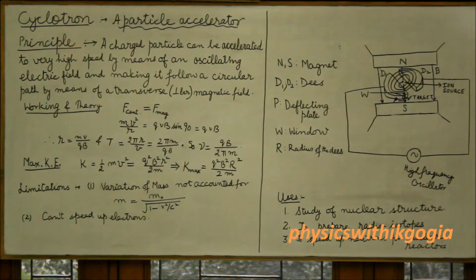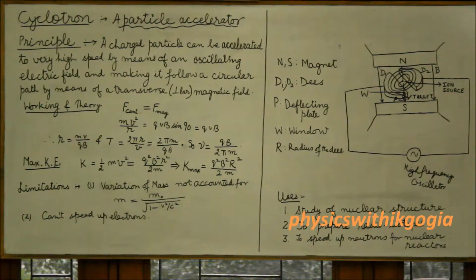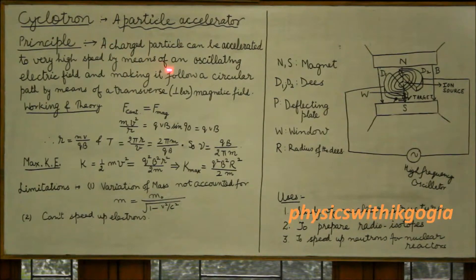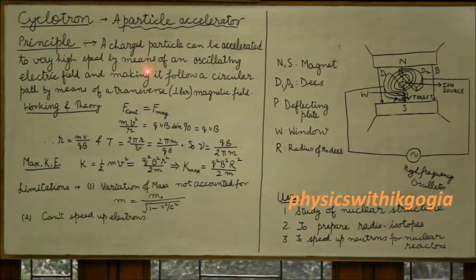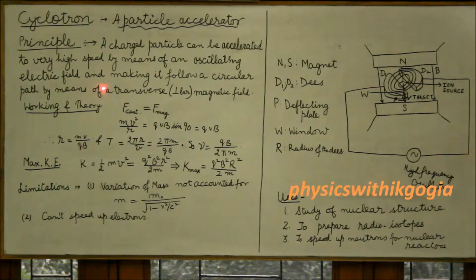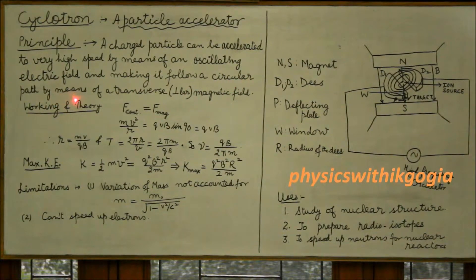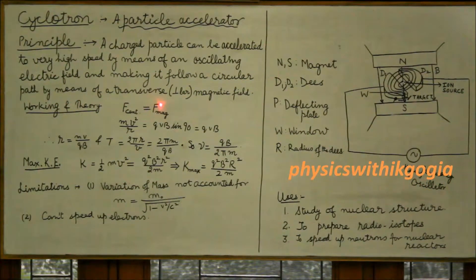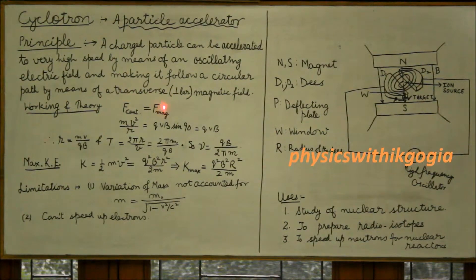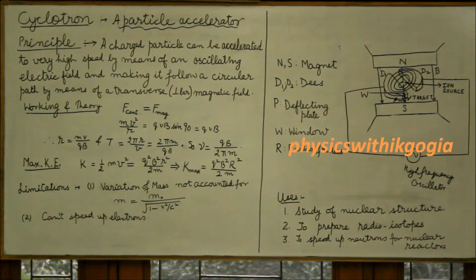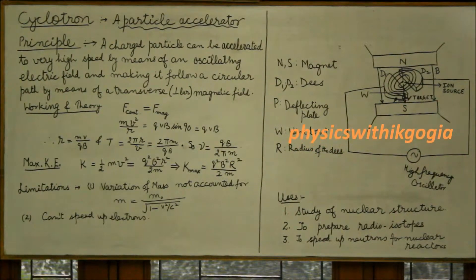The principle on which this device works is that a charged particle can be accelerated to very high speeds by means of an oscillating electric field, and made to follow a circular path by means of a transverse magnetic field. The transverse magnetic field means a field perpendicular to the plane of motion of the charged particle.